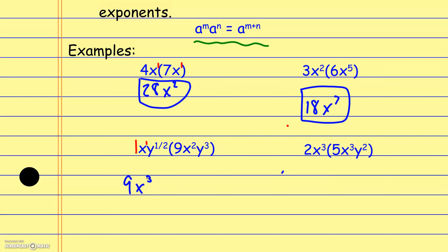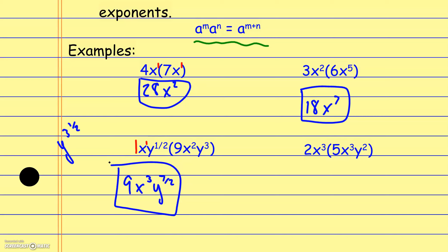Here we have y to the 1/2 power times y to the 1/3 power — adding those gives y to the 3 and a half, but we don't write mixed numbers in exponents, so converting to an improper fraction gives y to the 7/2 power. It's okay to have a rational exponent like that. For the next one, 2 times 5 is 10, the x exponents add to x to the sixth, and y to the second stays since there's nothing to add to it.